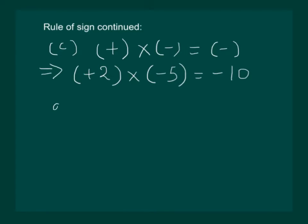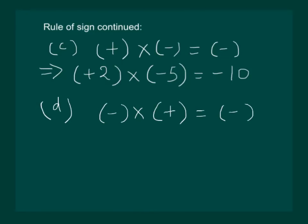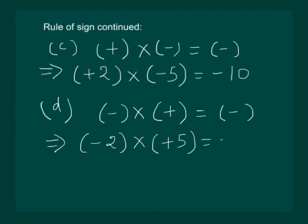Rule D: If we multiply a negative number with a positive number, the product will be a negative number. This implies, if we multiply minus 2 with plus 5, the answer will be minus 10.